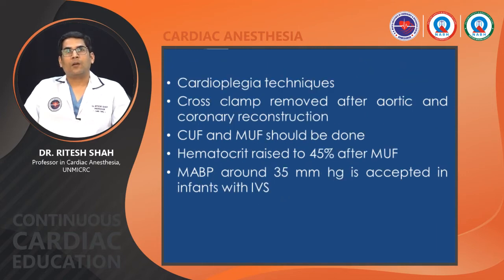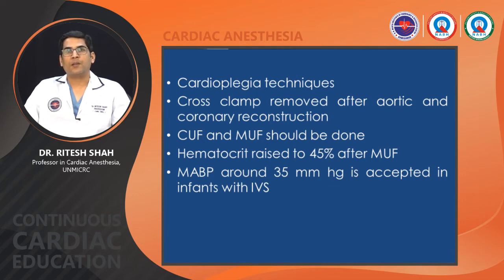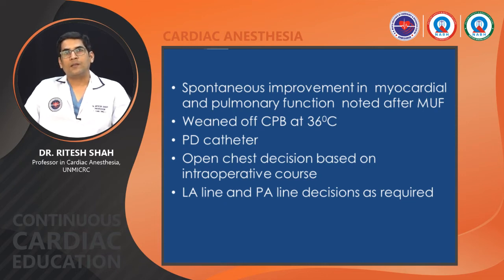Del Nido cardioplegia is given — initially through the aortic root and then through the coronary buttons. The cross clamp is removed after aortic and coronary reconstruction, and pulmonary artery repair is done after declamping the aorta. Modified ultrafiltration (MUF) should be done to reduce inflammatory mediators, reduce volume load, and improve hemodynamics. Hematocrit should be raised to 40–45% after MUF. Mean arterial pressure around 35 mmHg is accepted in infants with intact ventricular septum, while a higher pressure is required in patients with VSD. Spontaneous improvement in myocardial and pulmonary function is noted after MUF. Patient is weaned off CPB at 36°C. A peritoneal dialysis catheter should be placed beforehand; open chest decision is based on intraoperative course and hemodynamics.